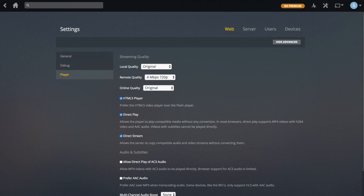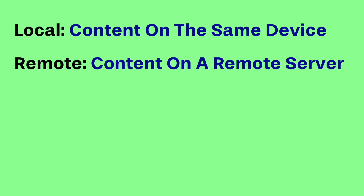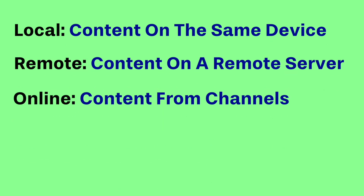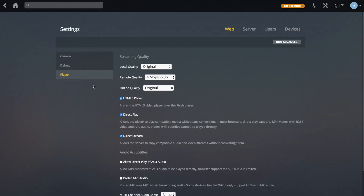Under Player, there are quite a few options. Local Quality is when you're playing media from the server that's on the same computer. Remote Quality is when you're streaming it from another server over the internet. And Online Quality is when you're using channels such as iPlayer, which I'm going to be showing you in a future video.